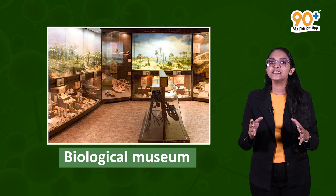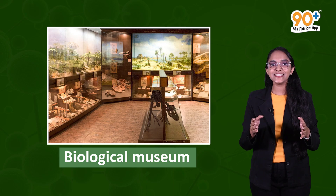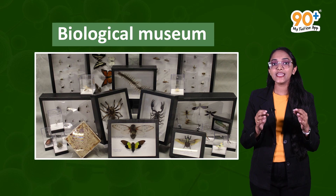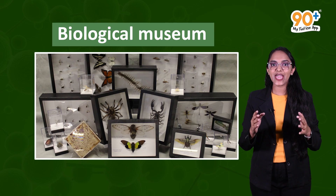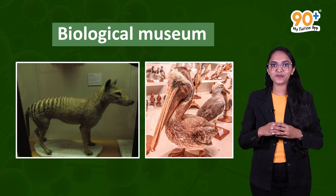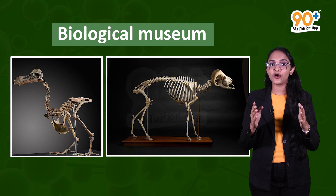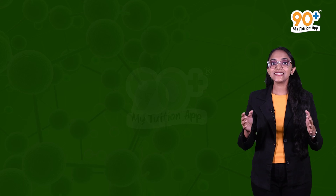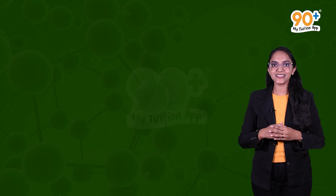The next taxonomical aid is the biological museum. Many of you may have seen a room in your school with preserved specimens inside containers or jars filled with preservative solutions. There should also be insects in insect boxes that are preserved after collecting, killing, and pinning, as well as stuffed animals and birds, skeletons of some animals and birds, and preserved forms of plants and animals.